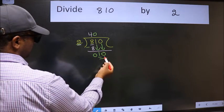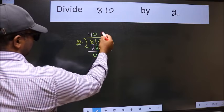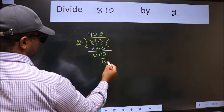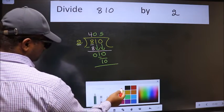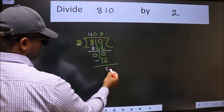Now 10. When do we get 10 in the 2 table? 2 fives 10. Now we should subtract. We get 0.